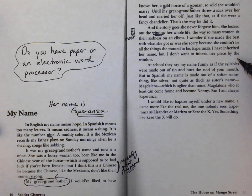At school they say my name funny, as if the syllables were made out of tin and hurt the roof of your mouth. You know, in plain old English her name would sound like Esperanza. Yeah, it's not very attractive. Esperanza. But in Spanish my name is made out of a softer something, like silver. Esperanza.